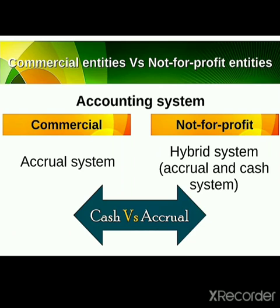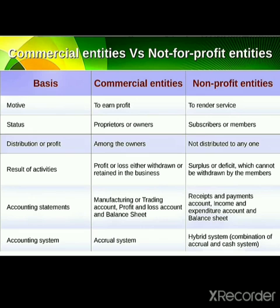Accounting system: Commercial organizations follow the accrual basis, while not-for-profit organizations use a hybrid system — they can use either accrual or cash basis. In cash basis, when a transaction takes place and payment is made through cash, it is a cash payment. So not-for-profit organizations may follow either system.